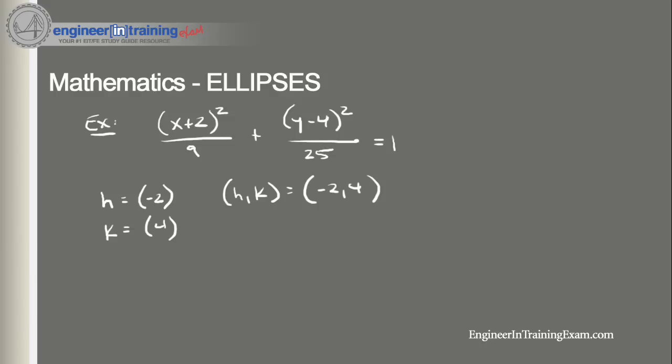So what we want to do now is determine what a and b is. We know this term at the bottom below the x term is a² and we know this term below the y term is b². So all we need to do is take the square roots to find out that a is going to equal 3 and b is going to be equal to 5.